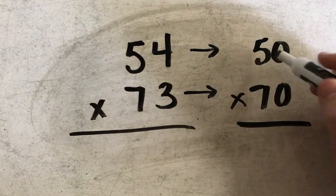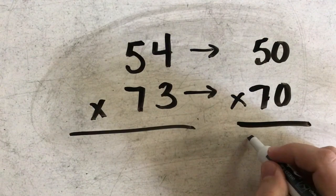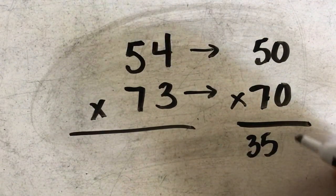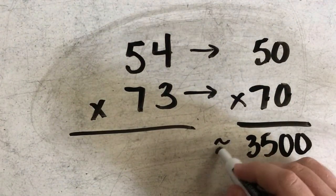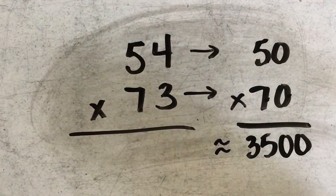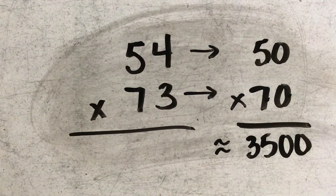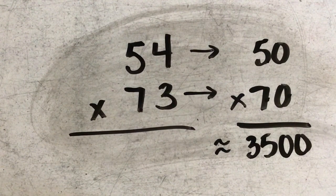When I multiply 5 times 7, I come up with 35. And I need to include one, two zeros in my estimate. So my estimate of 54 times 73 would be 3,500.